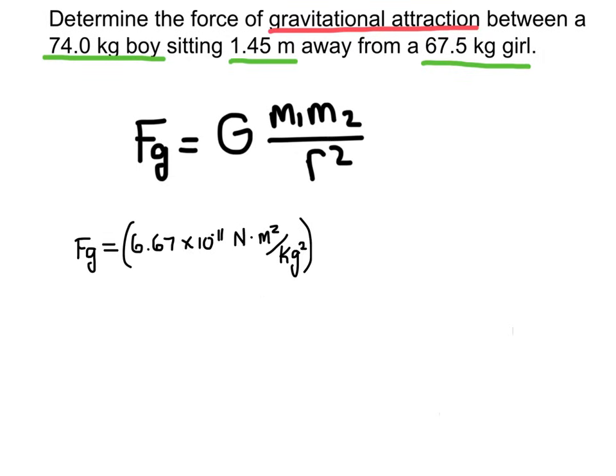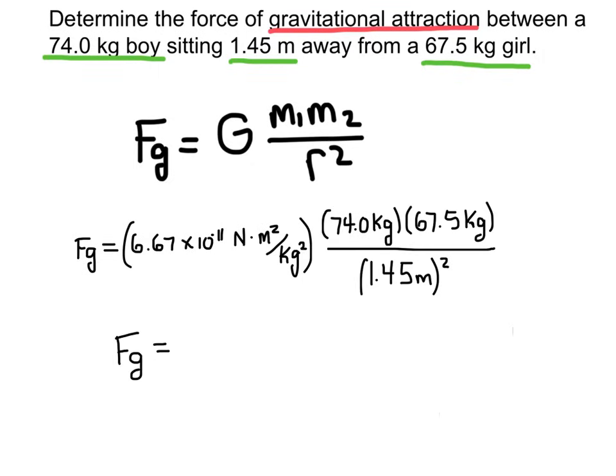So there's the value for G, and then we can plug in the two different masses. And then finally, the distance between the two masses. Now we can plug everything into our calculator. And we get a force of gravitational attraction of 1.58 times 10 to the negative 7 newtons.